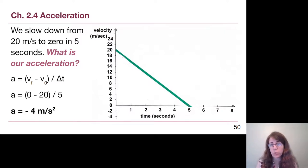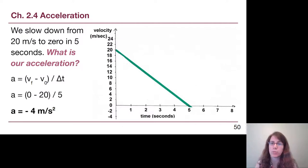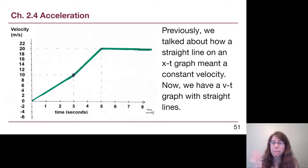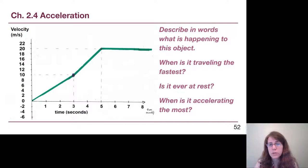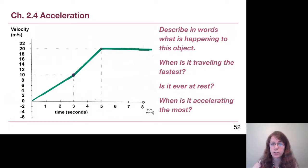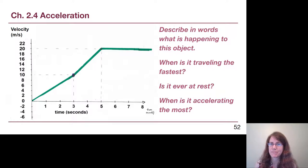We talked about how a straight line on a position-time graph means constant velocity. Now we have velocity-time graphs with straight lines. Pause the video and think through the upcoming questions, recognizing that although the shape may look similar to a previous graph, it is a completely different situation — we do not want to fall into the trap of thinking they're interchangeable.